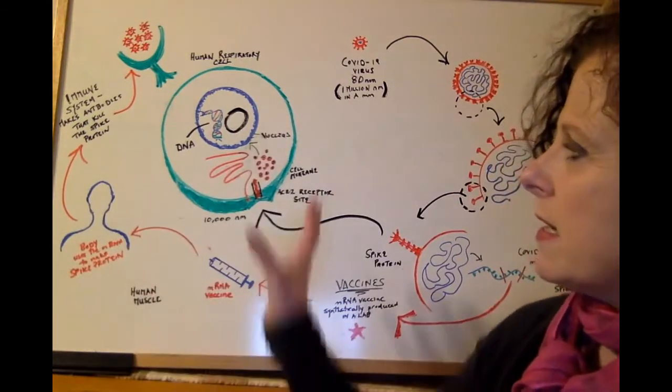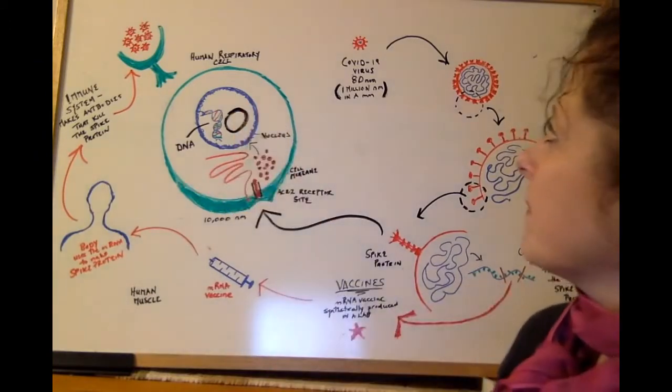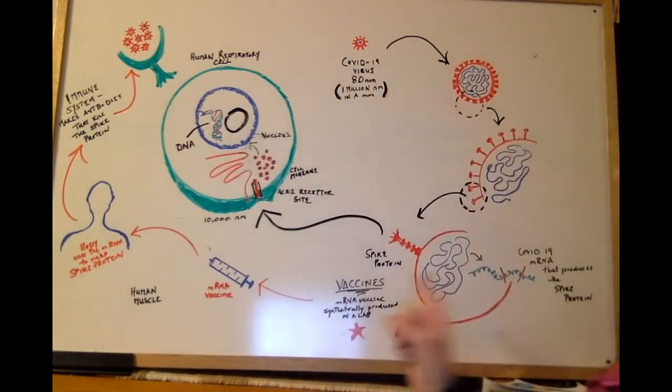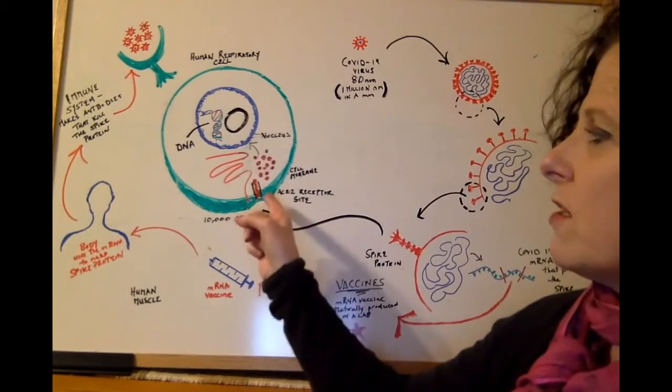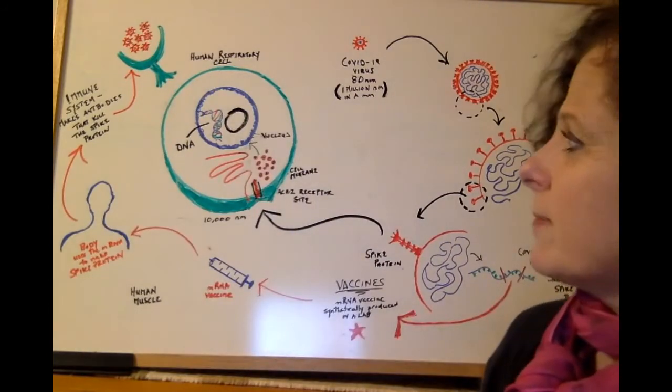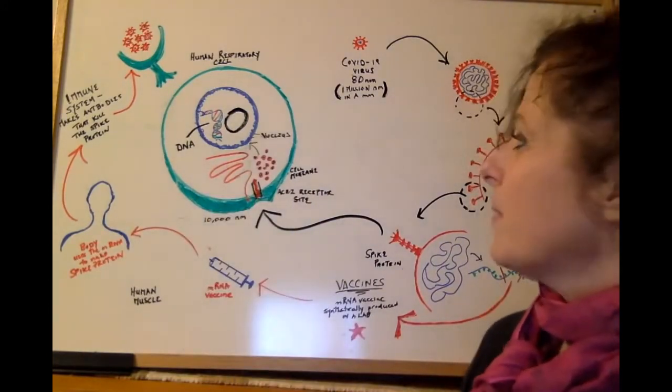What this illustration is: this is the human cell, this is the COVID virus. This is how the COVID virus attaches onto a receptor site and gets into the human cell. And the rest of the story we'll talk about later. So let's get started with some basic biology. This is fabulous stuff.